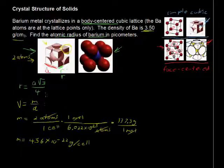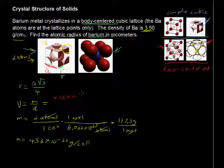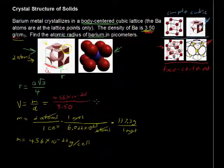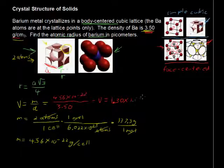So, back to the volume. The volume equals the mass, which we just found, 4.56 times 10 to the negative 22 grams per cell, divided by the density, and we are told the density, that's 3.50 grams per cubic centimeter. So, the volume equals 1.30 times 10 to the negative 22 cubic centimeters. We have the volume.